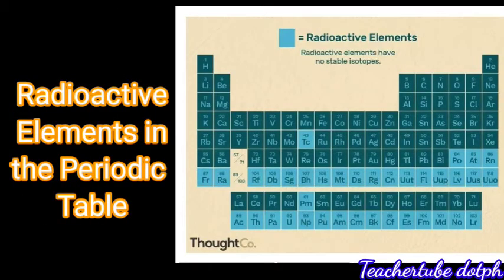Now let us look at the radioactive elements in the periodic table. The image here is the periodic table; you can see the radioactive elements in light blue color. However, radioactive elements have no stable isotopes, which is why they disintegrate so that they become stable. And during that process, these substances emit heat.